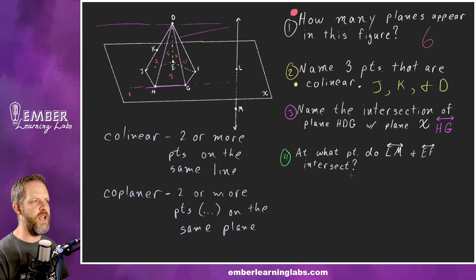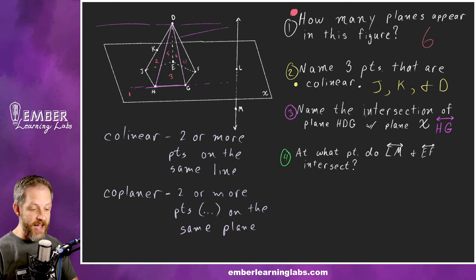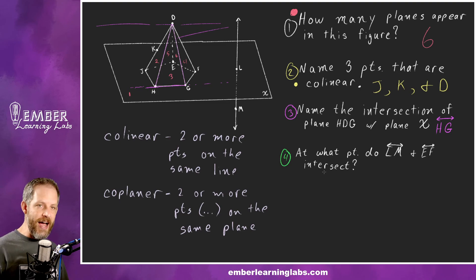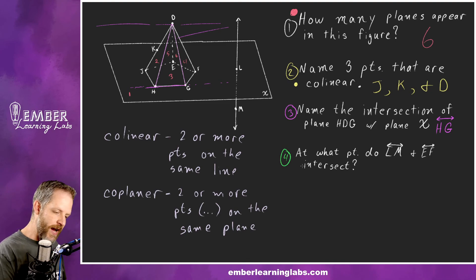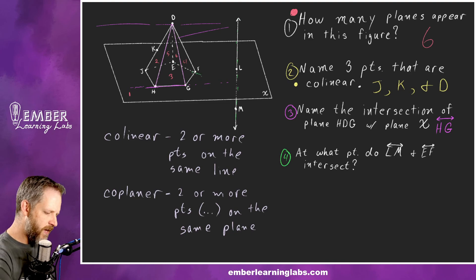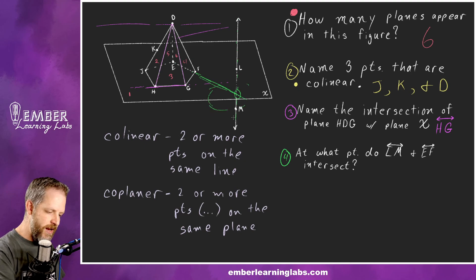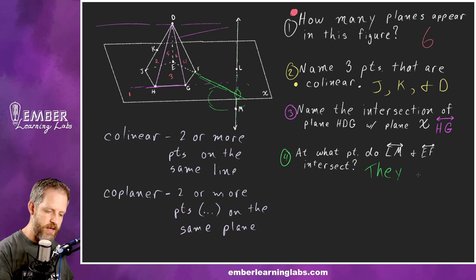For the last question, we use a different color to ask: at what point do line LM and line EF intersect? In example three, two planes intersected at a line; here we can explore whether two lines intersect at a point. Line LM is one edge, and line EF is on plane X. In three dimensions it looks like they might intersect, but this point on line LM would be out on the front plane, while line EF goes straight through — so they don't actually intersect.